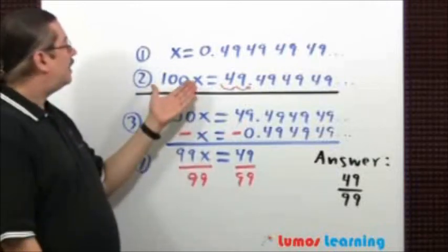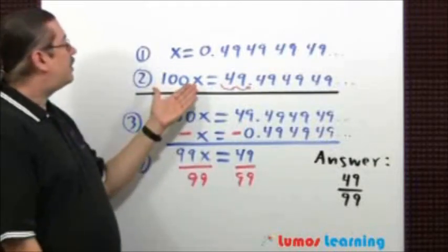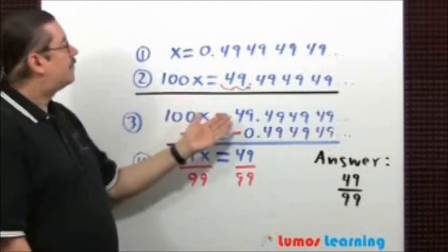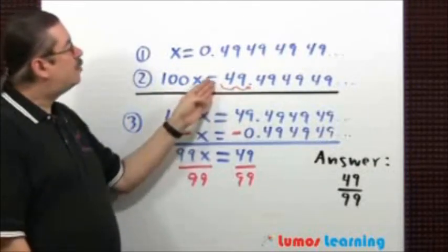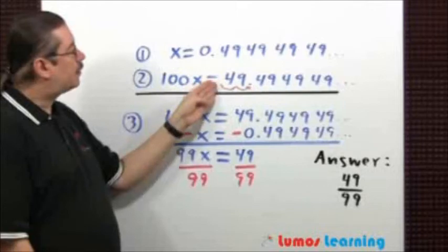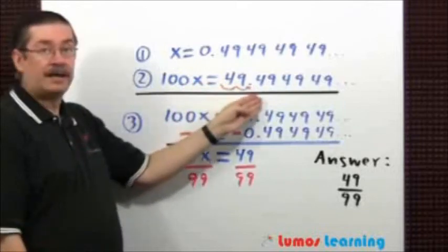When you multiply the left-hand side by 100, you get 100x. On the other side, just move your decimal place over two places to the right.